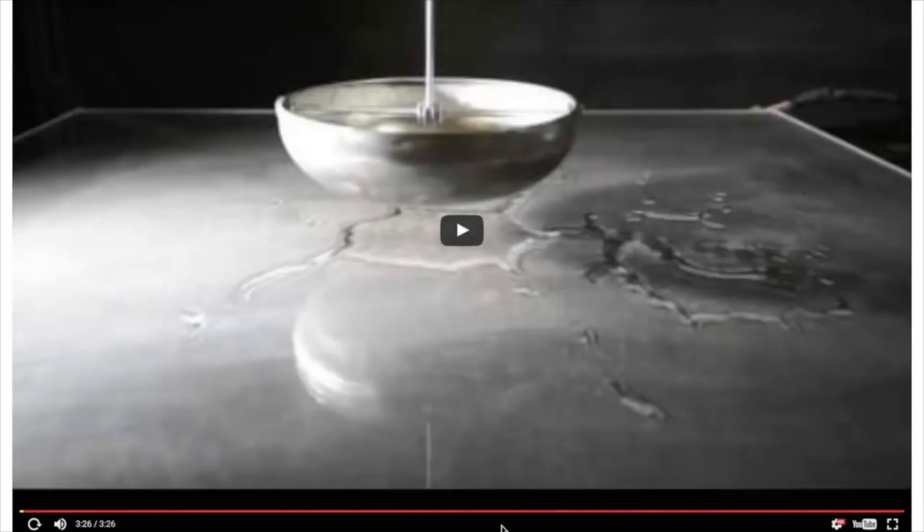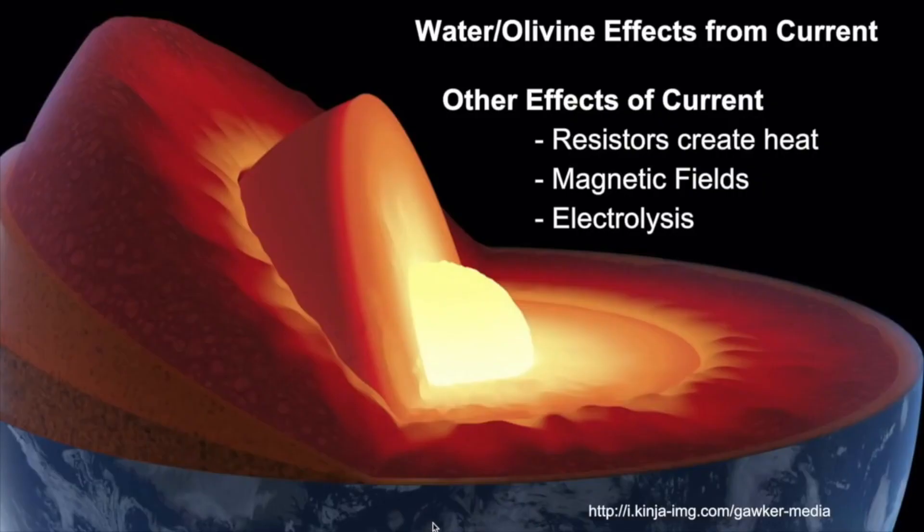So we have water in these subducted crusts. The number one mineral component of the mantle is olivine. And look at how they react to electricity. It's preposterous.